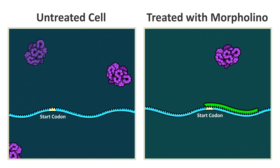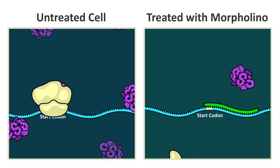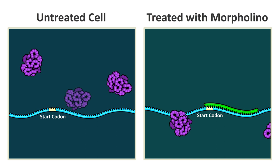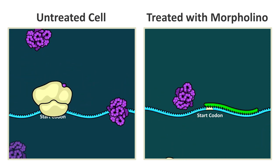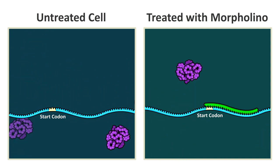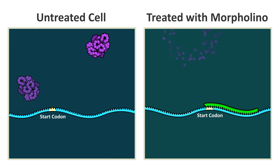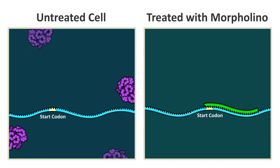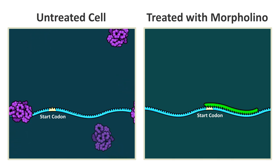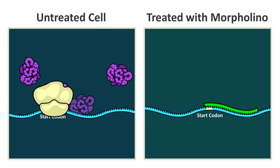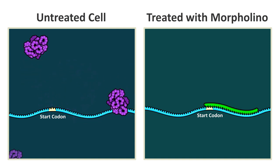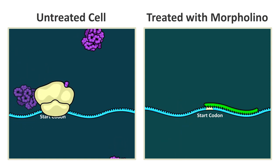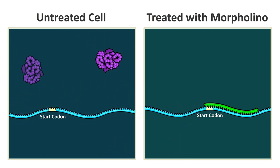In untreated cells, protein turnover occurs as old proteins are degraded and new proteins are made to take their place. In a morpholino knockdown, normal protein degradation occurs but new synthesis from the targeted transcripts is inhibited. The amount of time it takes to see a knockdown by western blot depends on the turnover rate of the protein. Some rapid turnover proteins, such as many transcription factors, will show a clear difference by western blot within 24 hours, while a structural protein may require a week or more to see a clear difference.